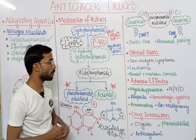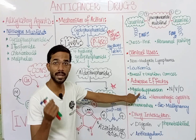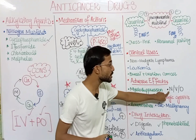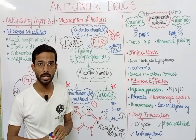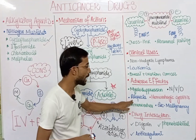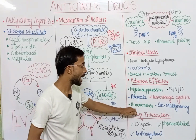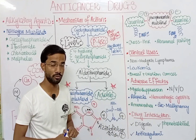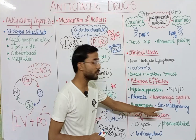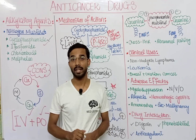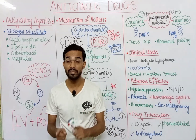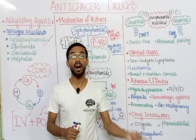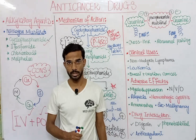Regarding adverse effects: the first is myelosuppression — bone marrow is suppressed and production of blood cells is reduced. Next are nausea, vomiting, and diarrhea, which are general symptoms of cyclophosphamide. Then alopecia, or loss of hair. Also amenorrhea — missing of periods in females — is an adverse effect of cyclophosphamide. Importantly, secondary malignancy: alkylating agents are used in cancer treatment but can also cause cancer themselves.